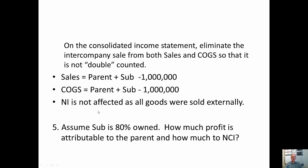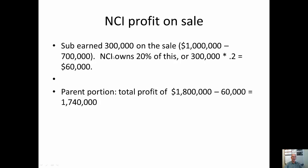Now, let's say instead of 100% ownership, the parent owns 80% of the subsidiary. How much of that consolidated profit is attributable to the NCI shareholders and the parent? Recall that the initial sale from the subsidiary to the parent was a $300,000 profit. NCI owns 20% of this $300,000 profit, which is $60,000. The remainder is owned by the shareholders of the parent. So the parent portion is $1.8 million minus the $60,000 NCI share, or $1.74 million.